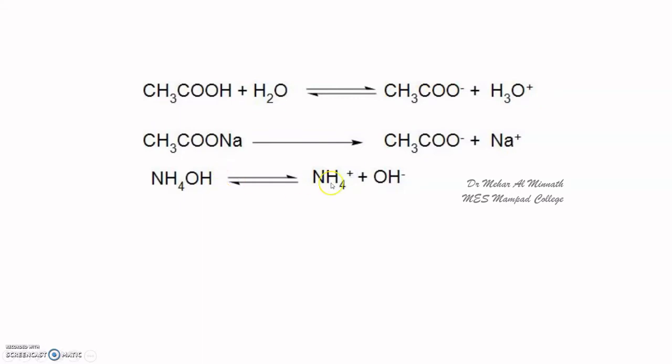Similarly, take ammonium hydroxide — ammonium ion and OH⁻ are formed, and when you add ammonium chloride to it, the ionization of ammonium hydroxide will be suppressed. The common ion here is ammonium. This is functioning based on Le Châtelier's principle. The equilibrium shifts in the direction in which the added common ion is used, by suppressing the dissociation.